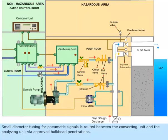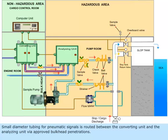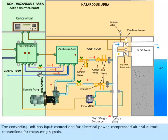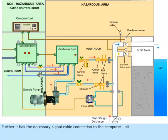Small diameter tubing for pneumatic signals is routed between the converting unit and the analyzing unit via approved bulkhead penetrations. The converting unit has input connections for electrical power, compressed air, and output connections for measuring signals. It also has the necessary signal cable connection to the computer unit.